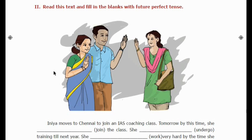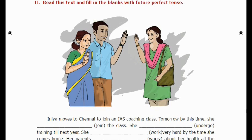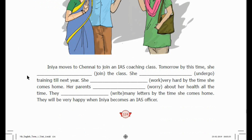Next, see the second exercise. Read this text and fill in the blanks with Future Perfect Tense. Inia moves to Chennai to join an IAS coaching class. Tomorrow by this time, she would have joined the class. So Future Perfect Tense talks about something that will be completed by a future point in time. Future Perfect Tense uses 'will' or 'shall' plus 'have' plus the past participle form of the verb.